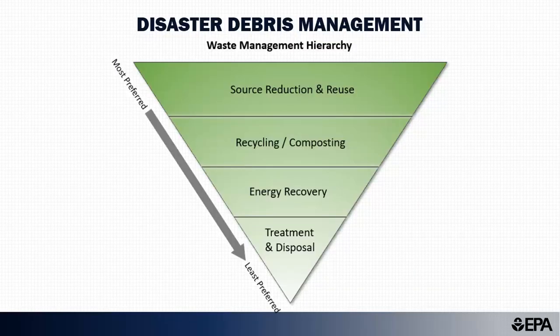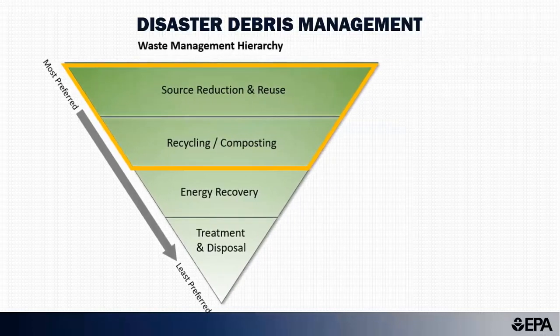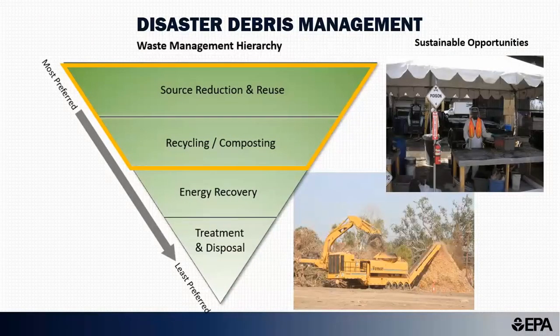The DDRT can help communities implement EPA's Waste Management Hierarchy by identifying opportunities to recover valuable material and save landfill space. For example, rather than landfilling or burning debris, the DDRT can help users plan for sustainable opportunities to reuse, recycle, or compost debris in a disaster area, such as the opportunities represented by the photos on the right, which depict collecting and chipping vegetative debris and segregating household hazardous waste.